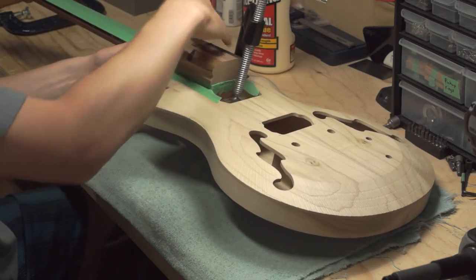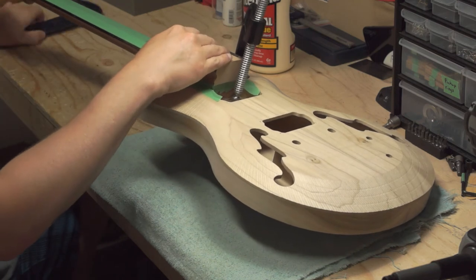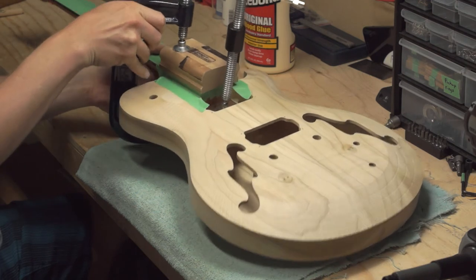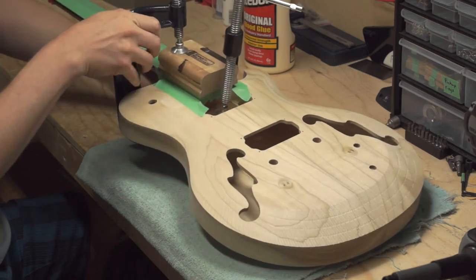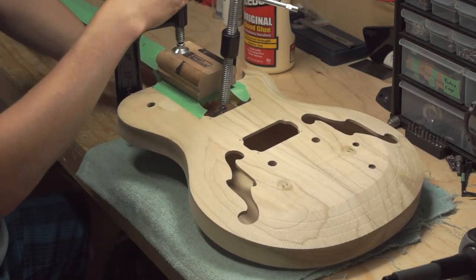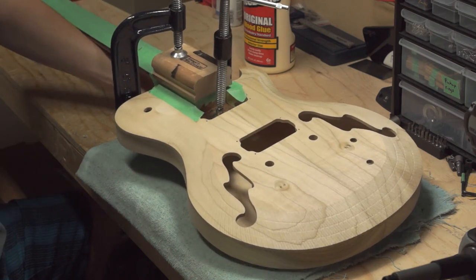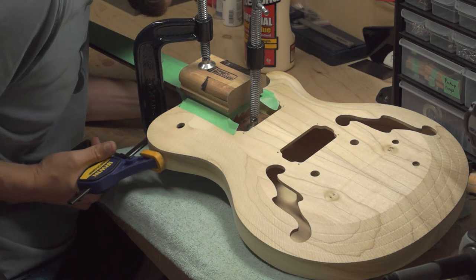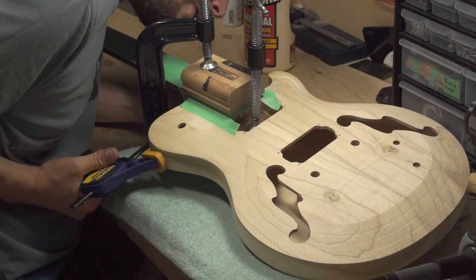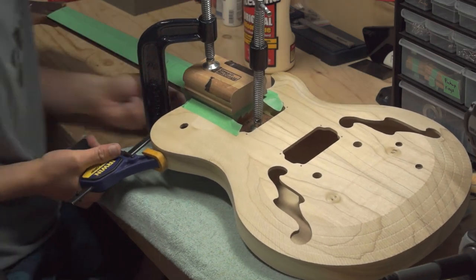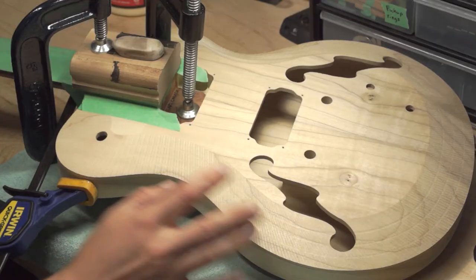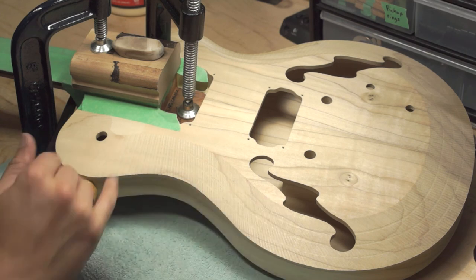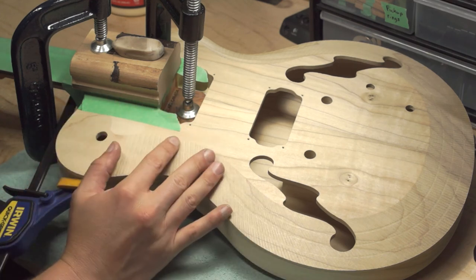Put the radius block on the top here. Get your other clamp. And then put this at the heel. So there we go. Neck is set into the body. We're good to go for some rough sanding on this entire guitar.